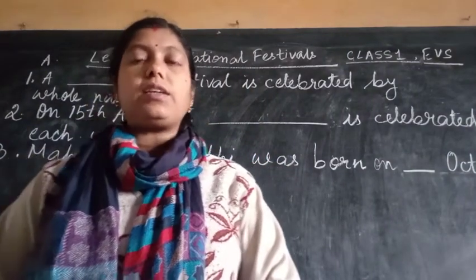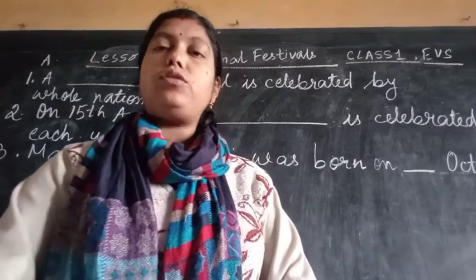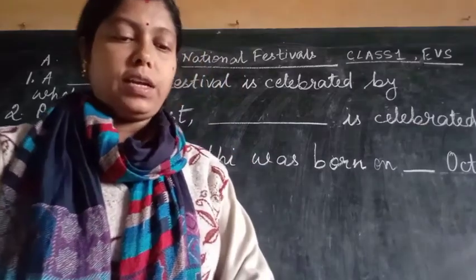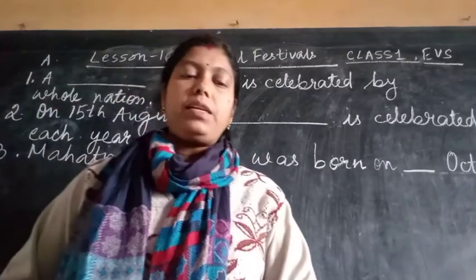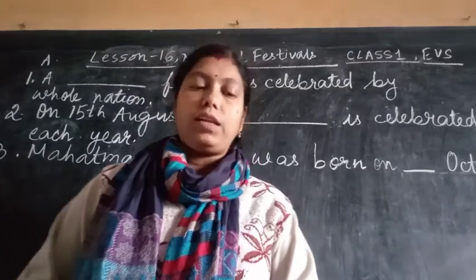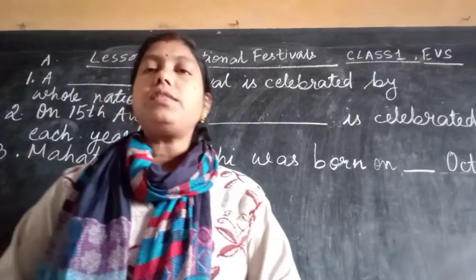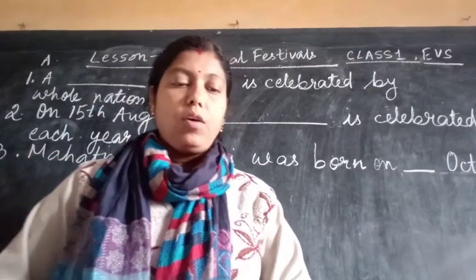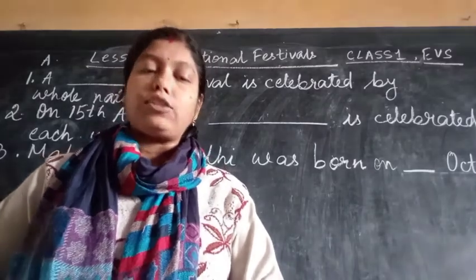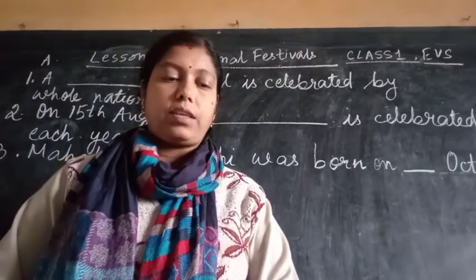This is 'encircle the right option.' You see here: a blank festival is celebrated by whole nation. Three options are given here — one is religious, national, and fun.